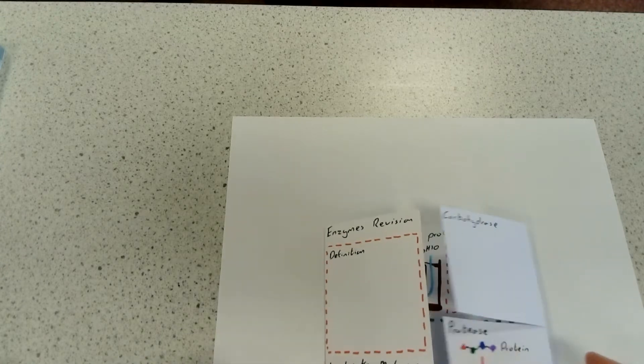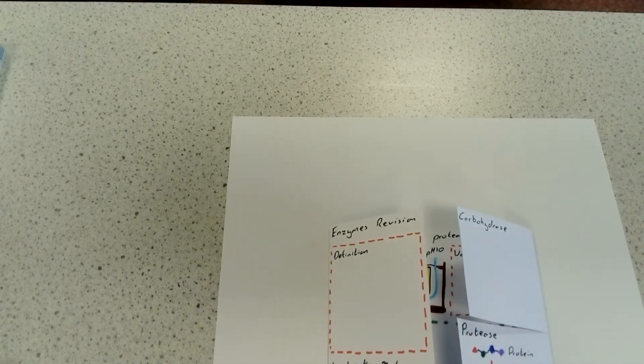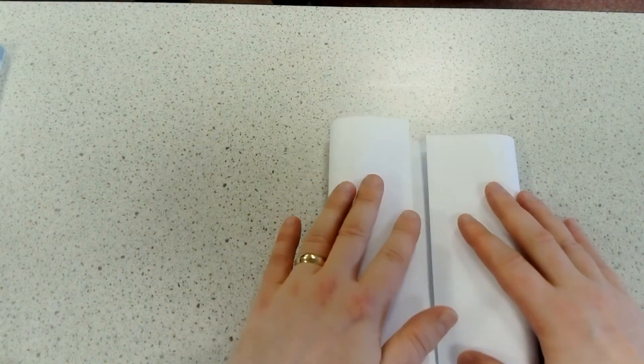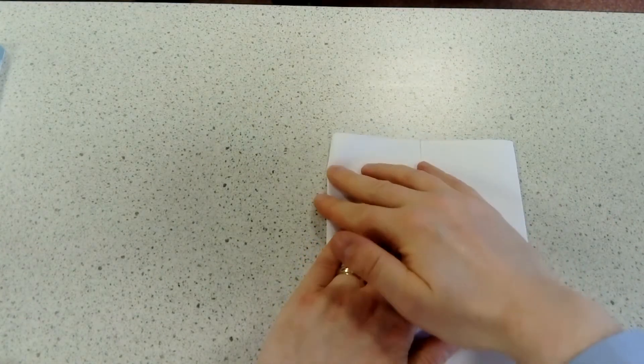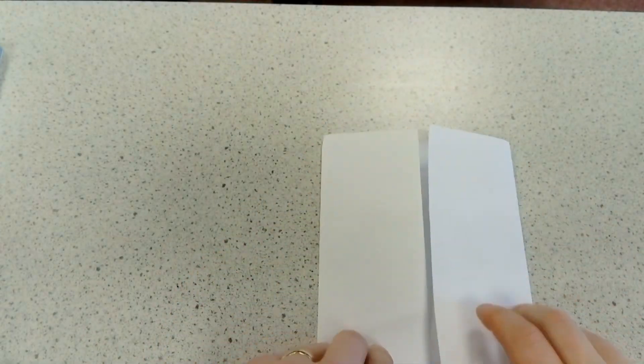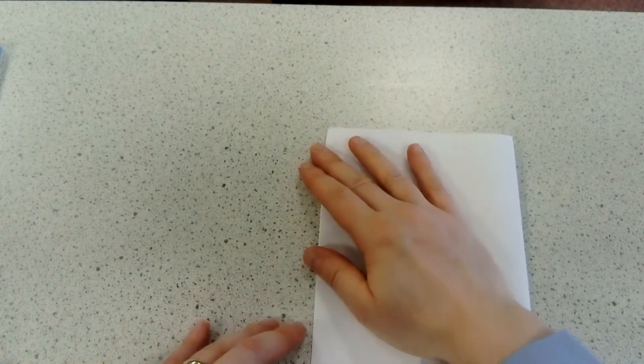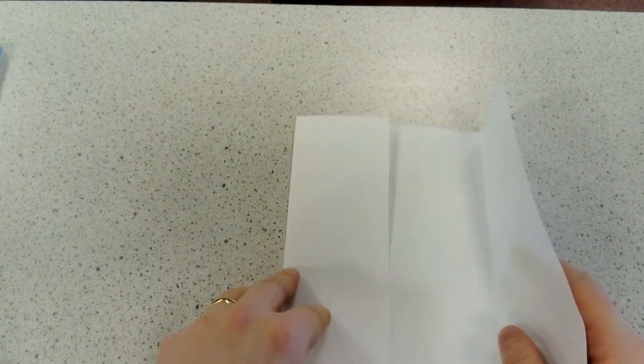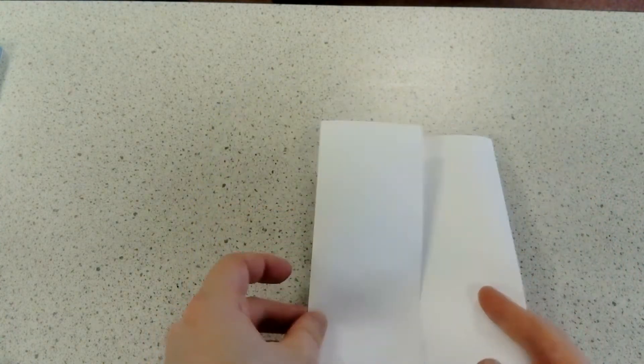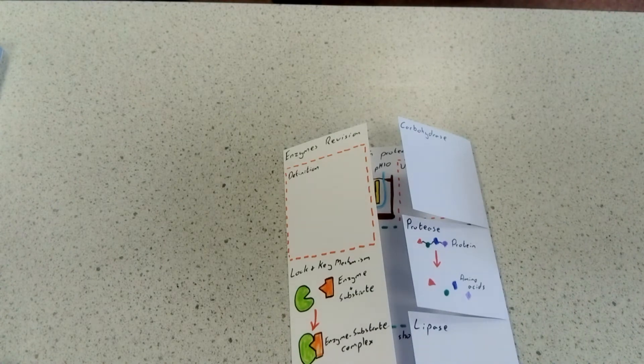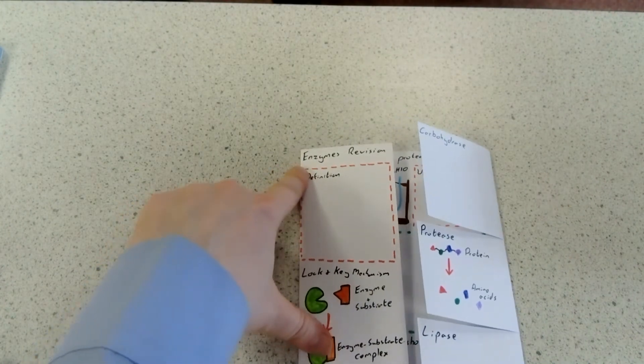As part of your revision today, you're going to make something specifically on enzymes. Start with a sheet of paper and fold it over so it opens up like a cupboard. Don't fold it in half or in thirds—that won't work. Fold it so it opens up like that.